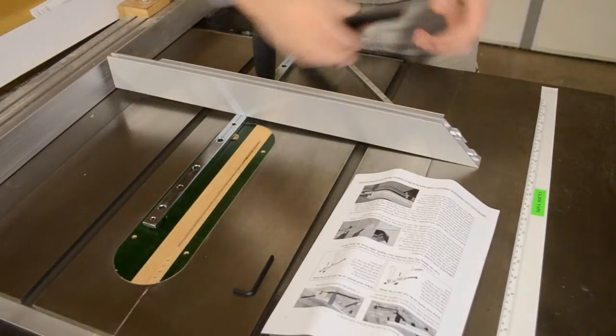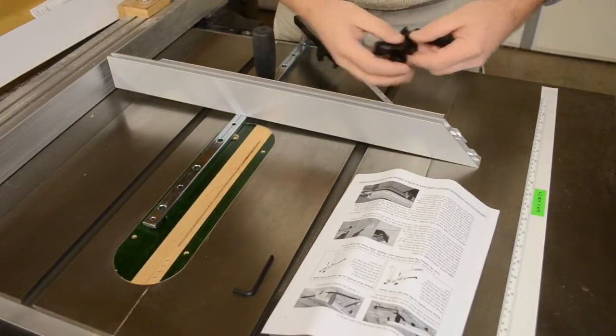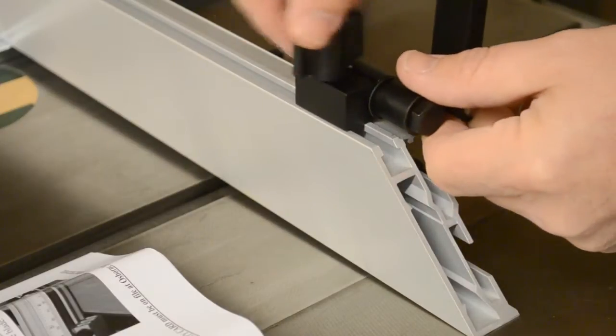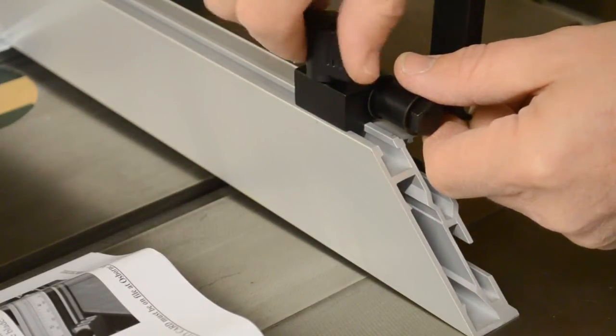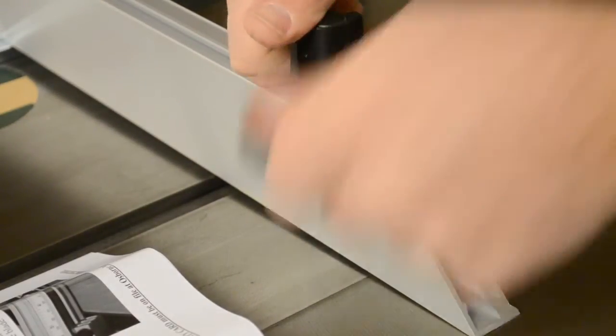The flip stop comes pre-assembled. To attach it to the fence, simply slip the head of the bolt into the T-slot on the top of the EB3.